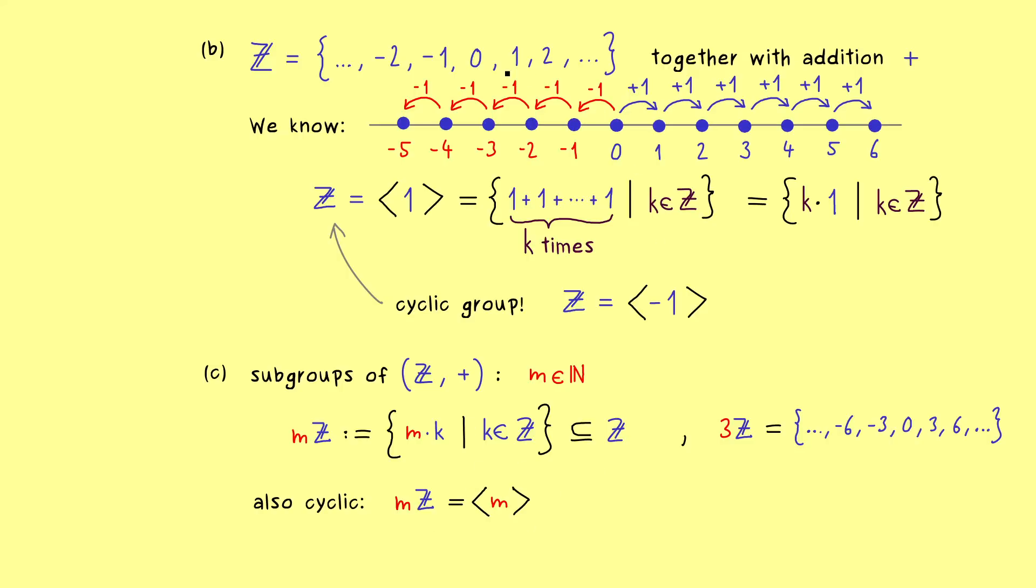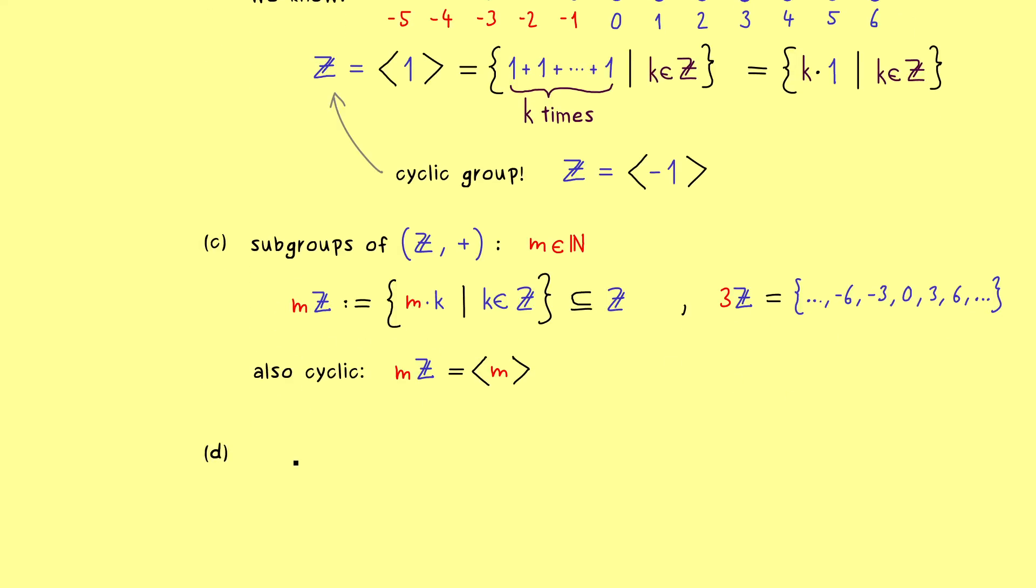And obviously our generator can be chosen as the given number m. Indeed, it's the same picture as before: with the number m, we can jump through all the numbers in our set. So everything here is not so complicated, but these are already very important examples of cyclic groups. And there please note that all these groups here have infinitely many elements.